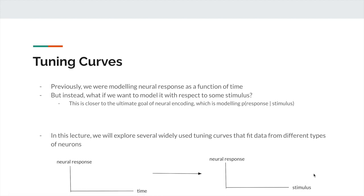In this lecture we're going to focus on a variety of mathematical models that fit data from real-world experiments. The three curves are the Gaussian distribution, the cosine curve, and the sigmoid function. I'll explain the parameters of these models, the experiments behind them, and the types of neurons that exhibit these tuning curves.